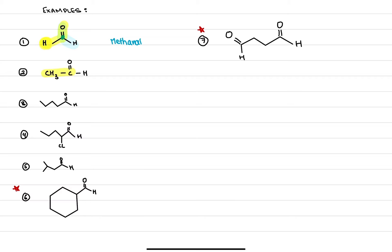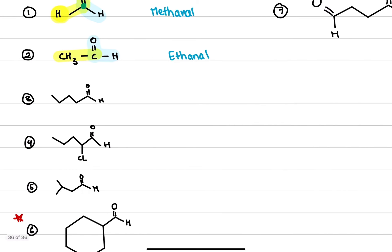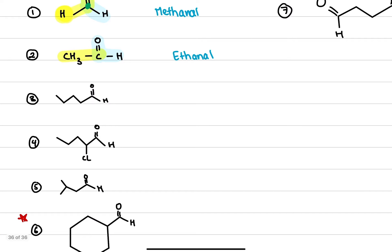Let's go on to the second example. In this case I have two carbons involved, so this is going to be 'eth-', and I see that I have a COH bond which is an aldehyde group, so I know this is going to end with '-anal' — it is ethanal. Then let's move on to the third example: I have one, two, three, four, five carbons, so this is going to be 'pent-', and with the COH group it is pentanal.